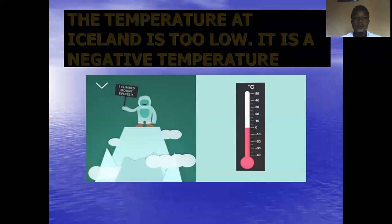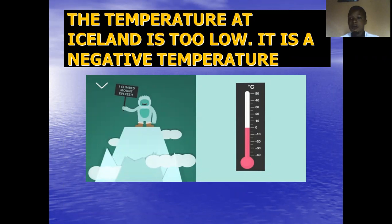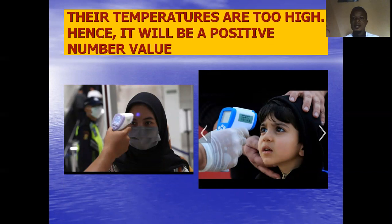I am going to take you to Mathematics. Do listen and enjoy with me. Now, if you have been to England or Iceland, you will find out that most times the temperature is too low, to the extent that it will have a very negative value — it is a negative temperature. So the number value of it is negative. Also, sometimes, especially in this era of the pandemic — coronavirus — if someone is infested by that virus, the temperature of that person will be too high, giving a positive value. So the number value is positive.